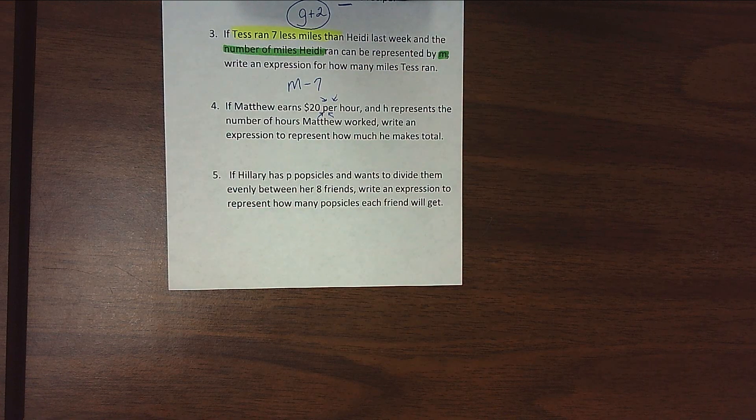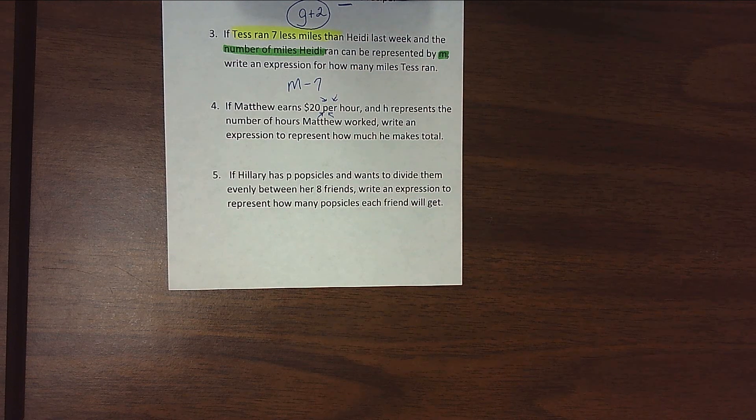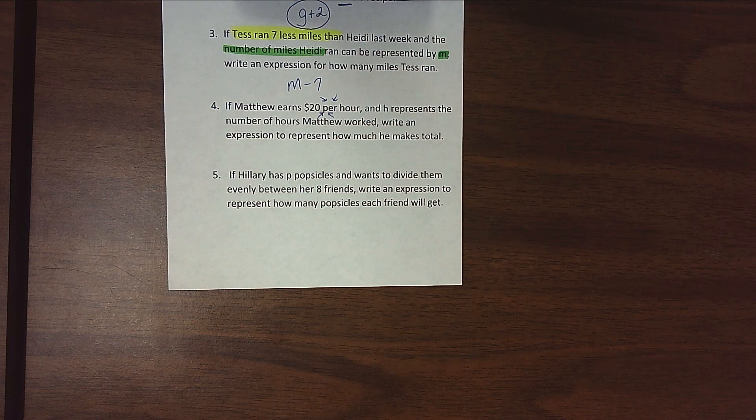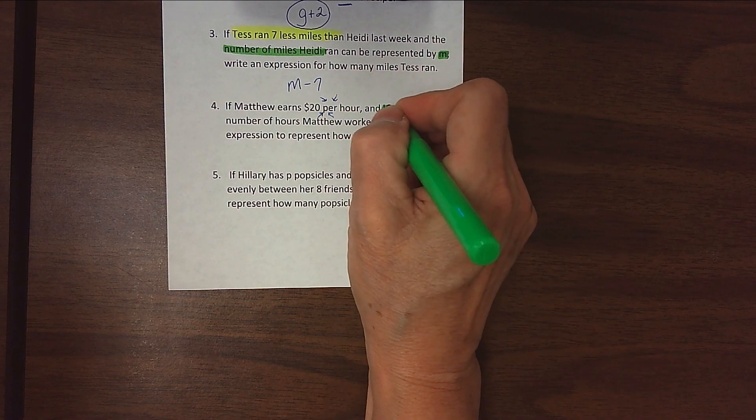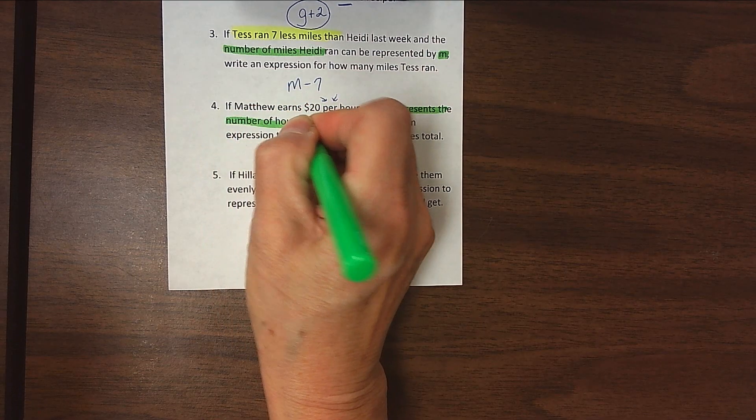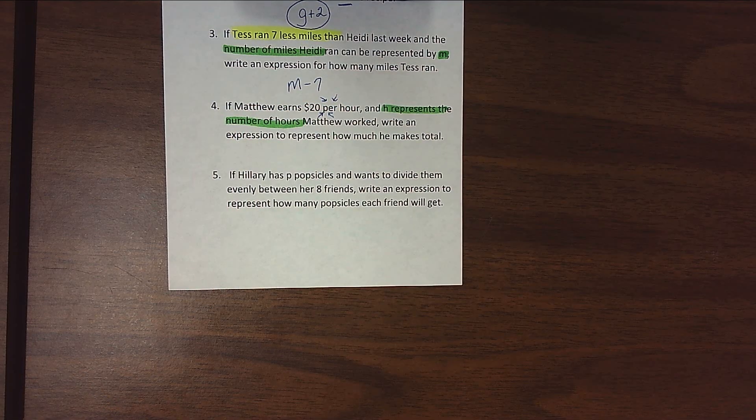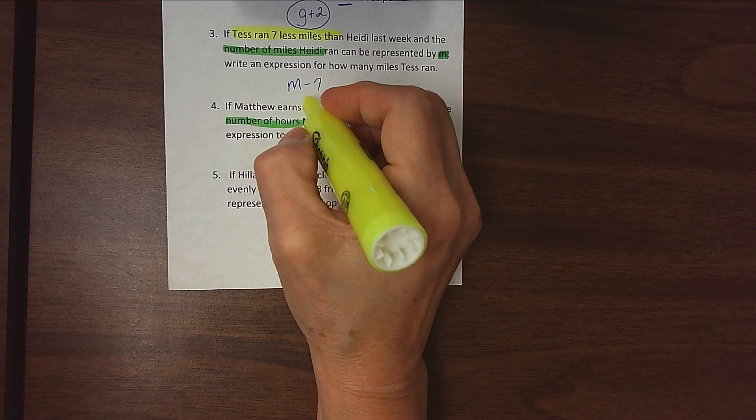If Matthew earns $20 per hour, and H represents the number of hours Matthew worked, write an expression to represent how much he makes total. So we know that Matthew earns $20 per hour, and we know that the H is the number of hours. So H is our number of hours that he worked, and $20 is how much he earned per hour.